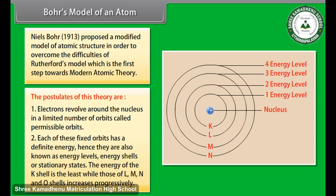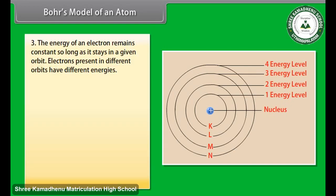The energy of the K shell is the least, while those of L, M, N, and O shells increases progressively. 3. The energy of an electron remains constant so long as it stays in a given orbit. 4. Electrons present in different orbits have different energies.